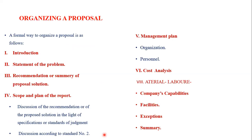Now we come to a general outline for a management proposal — a solicited proposal. Number one is introduction: you have to write a very catchy introduction. Number two is the statement of the problem: explain the problem and provide a summary of the recommended solution. This section is taken from the recommendation report. Number three covers the scope and plan of the report: what is the benefit of this project and what other sections will be included.